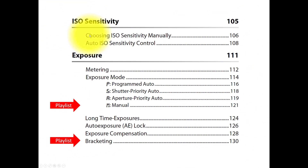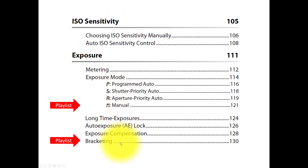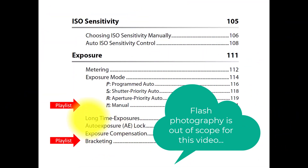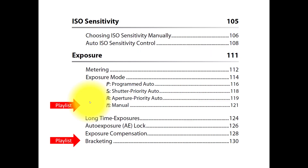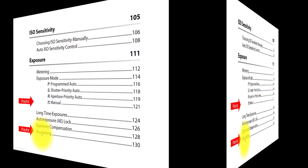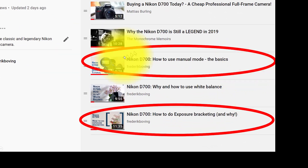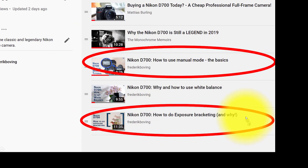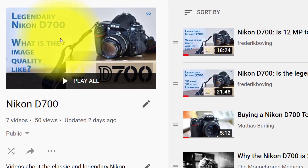Hi there and thank you for tuning in. In this video I will be talking about exposure and ISO sensitivity as shown in the table of contents from the manual. I will not be talking about flash photography — I think that's a big subject on its own — so I will only be talking about exposure for available light. If you want to dive into manual mode or bracketing in more detail, I have separate videos about that, part of the playlist related to the Nikon D700.